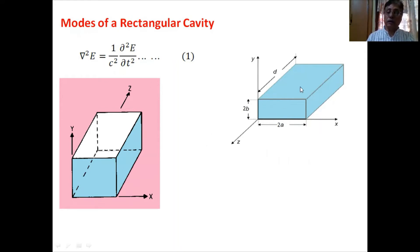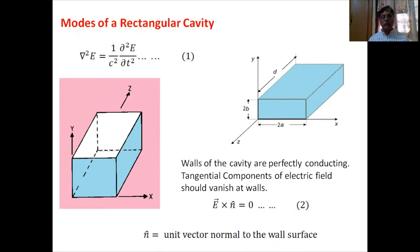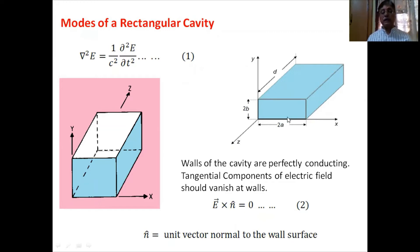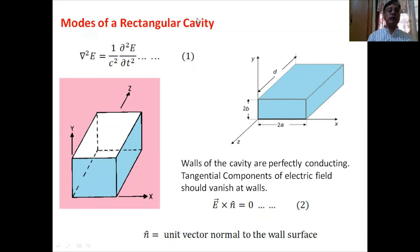The boundary condition assumed here is that the walls of the cavity are perfectly conducting. This means the tangential components of the electric field must vanish at the walls: E cross n = 0, where n is a unit vector normal to the wall surface. We must solve the wave equation subject to this boundary condition to get the standing wave pattern and modes of oscillation in the rectangular cavity.